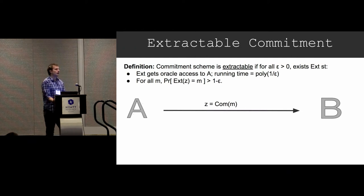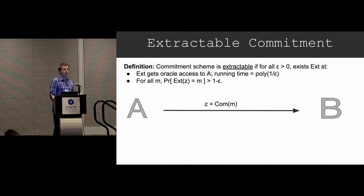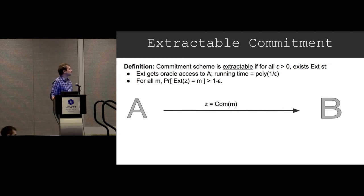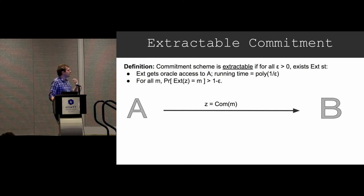I want to jump to the main technique for how you prove non-malleability against the sequential man-in-the-middle, because that's what we're going to be doing from here on out. The key is a notion of extractability for commitments. An extractor for a commitment scheme is an algorithm that gets oracle access to Alice, and given a commitment plus the oracle access to Alice, it's going to extract the committed value inside.